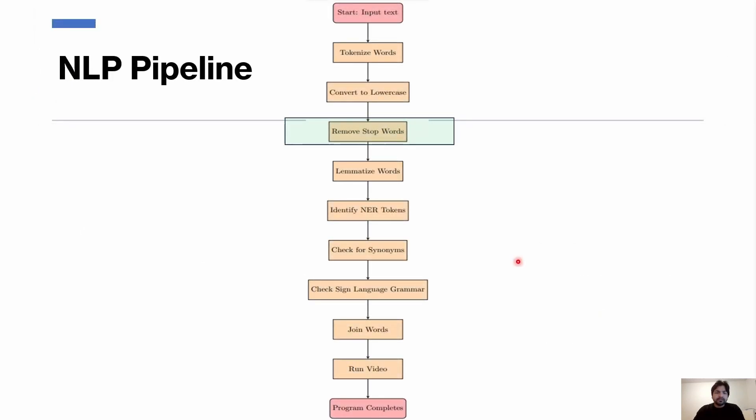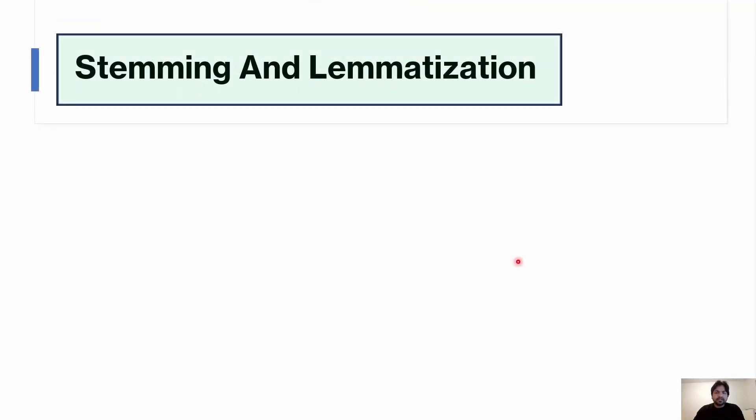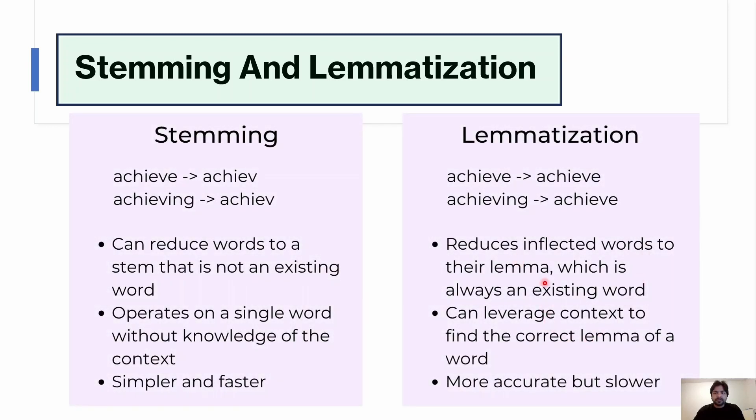After stop words removal, the words were lemmatized. Lemmatization is a linguistic process that reduces words to their base or root form known as lemmas. For example, the word 'achieving' or 'achieved' would be reduced to its lemma 'achieve'. This technique helps in standardizing words so that variations of the same word are treated as one entity, which makes the analysis more efficient and accurate. Lemmatization helped in consolidating words with the same meaning into a single representation, which gave insights into the underlying content and helped in decreasing the vocabulary.